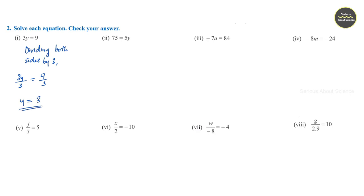Second question: 75 is equal to 5y. Here also we divide both sides by 5. That is, 75 by 5 is equal to 5y divided by 5, so y is equal to 15.